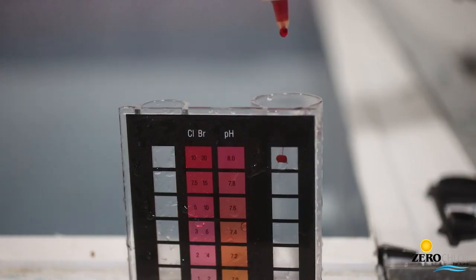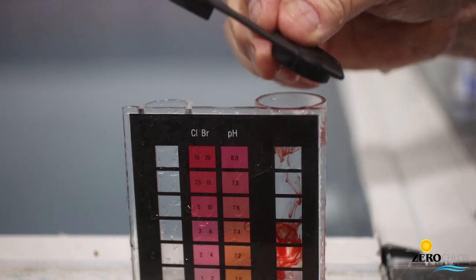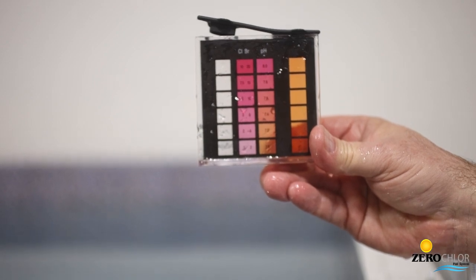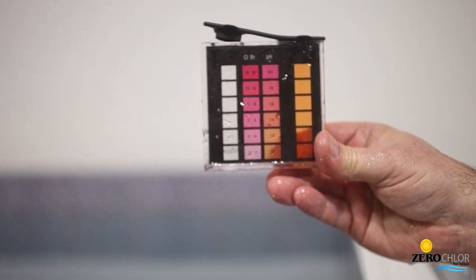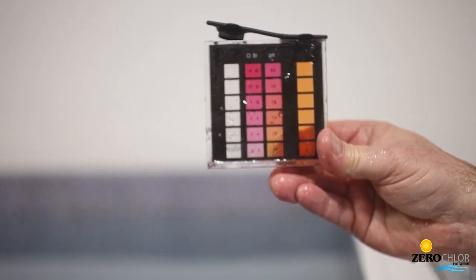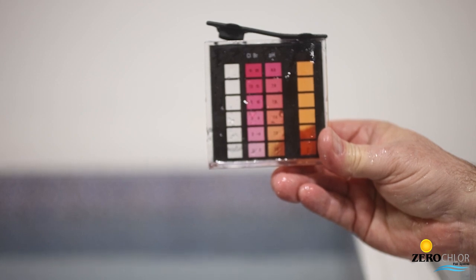Keep the reagent bottle vertical when adding the drops. Cap the sample and mix. Now compare the color to the sample of the comparator. This will give you your result. Using white background will improve accuracy.